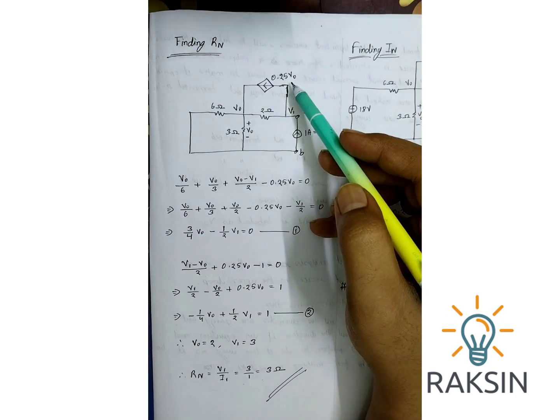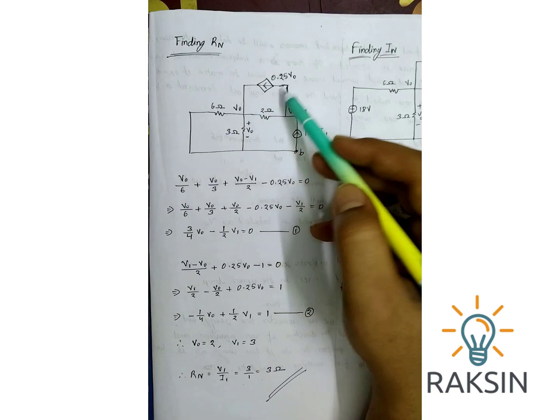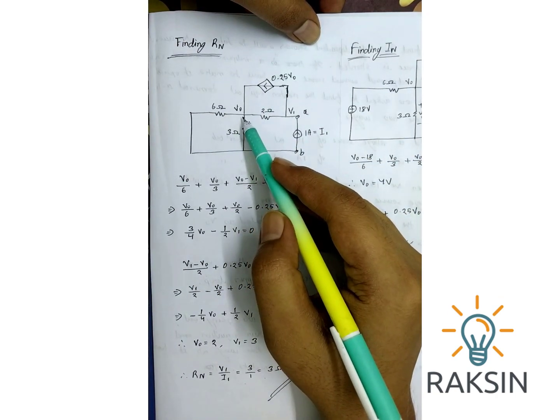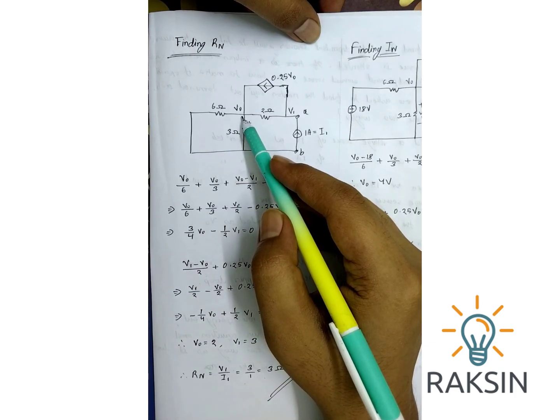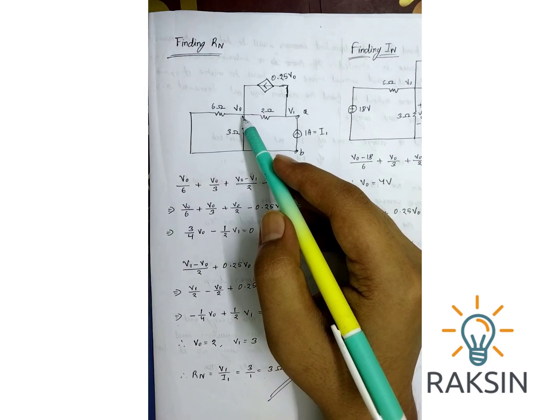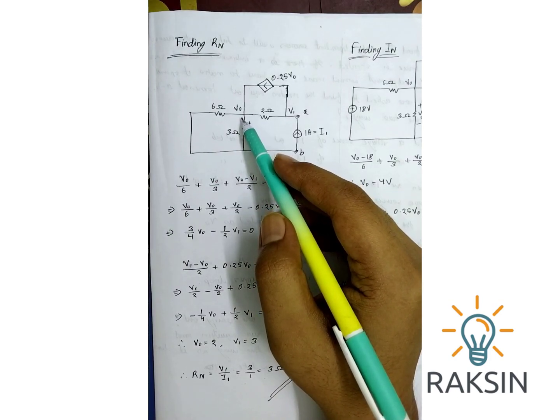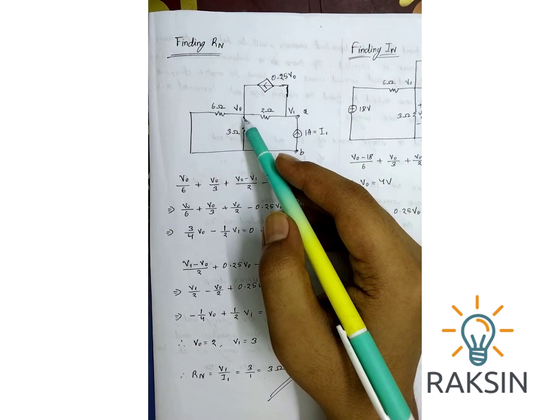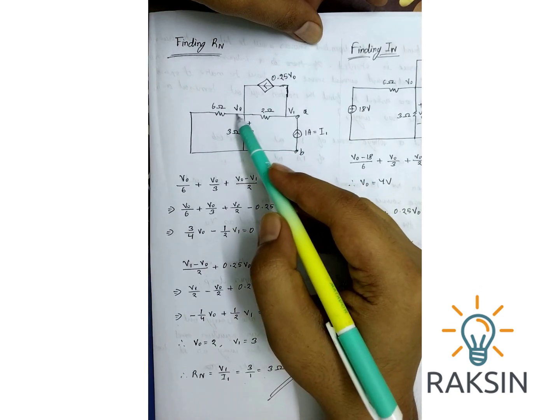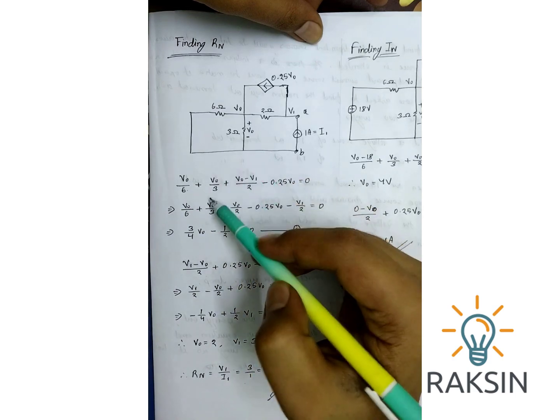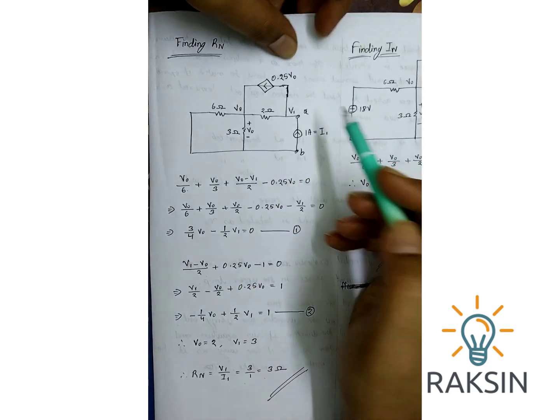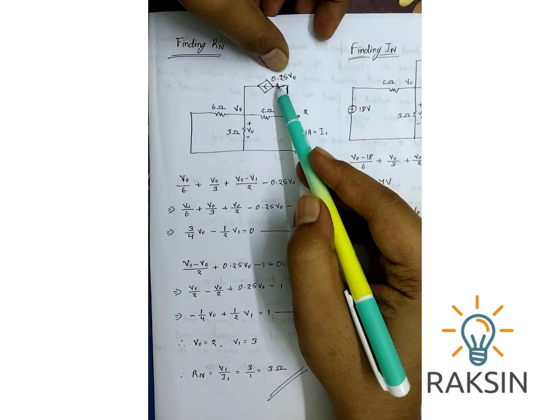In this upper node apply KCL. Let's assume all the currents are going out because it's easy calculation and there is less chance to make a mistake. This current is V0 by 6, this is V0 by 3, this is V0 minus V1 by 2, and this current is 0.25V1 by 2.